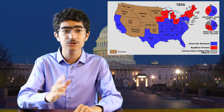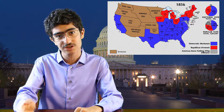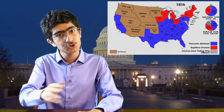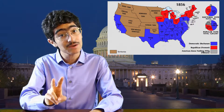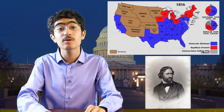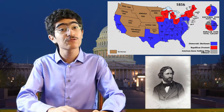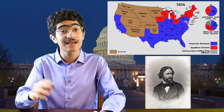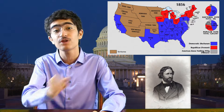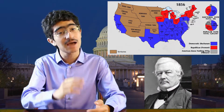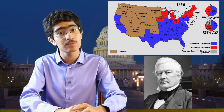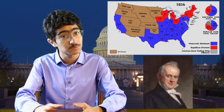The party quickly replaced the Whigs, and for a new party performed very well. But in the election of 1856, just two years after its founding, its candidate John Frémont obtained second place, right in front of Know-Nothing candidate — yes, that was the name of the party — Millard Fillmore, and behind the Democratic James Buchanan.